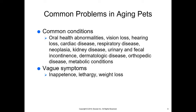Common conditions with any aging pet include oral health abnormalities, especially if teeth and mouth care were neglected early in life, vision loss, hearing loss, cardiac disease, respiratory disease, neoplasia (cancer), kidney disease, urinary and fecal incontinence, dermatologic disease, orthopedic disease, and other metabolic conditions. Some of these can be prevented; others are a normal aging process. Animals can be perfectly healthy and then get a disease that we can treat and fix.